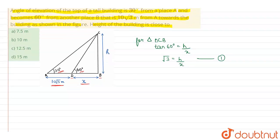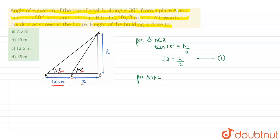Now the second equation, that will be for triangle ABC. So we can write here tan 30 degrees is equal to h upon 10 root 3 plus x.